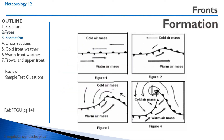Let's talk about how a front will form, or a frontal wave. Often we'll have a cold air mass beside a warm air mass and they're moving in anti-parallel directions. Let's say the cold air is moving to the left, the warm air is moving to the right, then eventually the warm air mass will start bulging into the cold air mass.